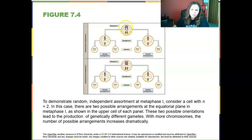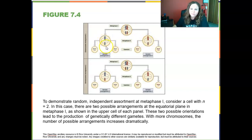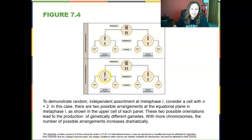Here's what independent assortment looks like: if an organism only had two chromosome pairs, both of dad's could end up on the left, or we could flip one so mom's goes left and dad's right, resulting in a mix of mom and dad's chromosomes ending up in our gametes.